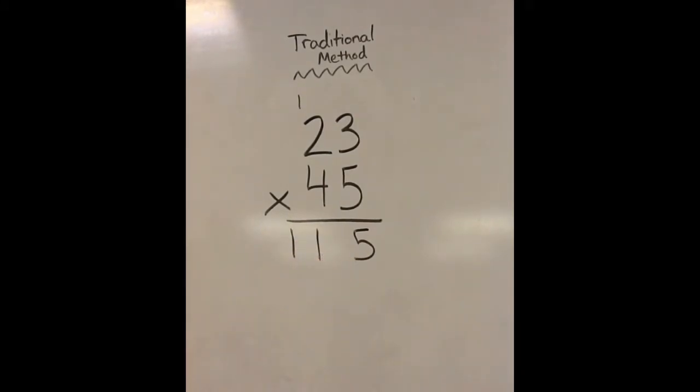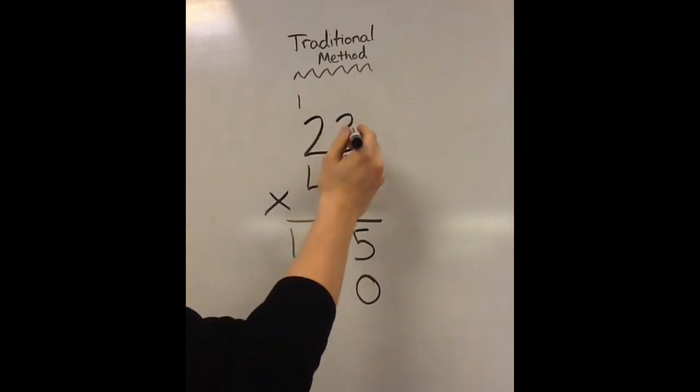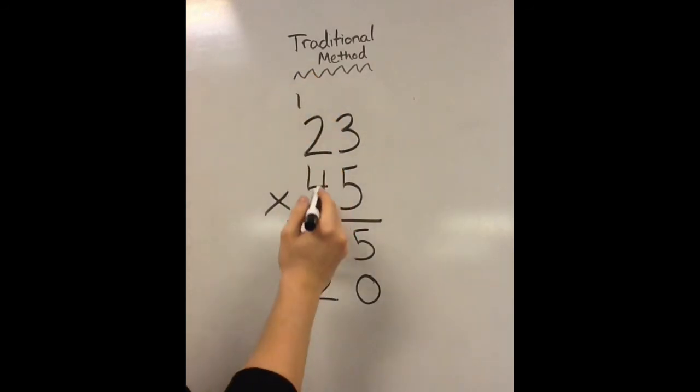Now, with the traditional algorithm, they have you adding a 0. I've heard it, I've seen it taught as a 0, or even an x, and that's just fine. Then we take 4 times 3, and that's 12. Carry the 1, which is already there. 4 times 2 is 8. Add the 1 is 9.